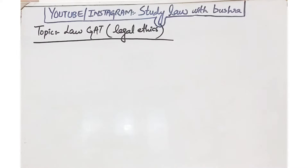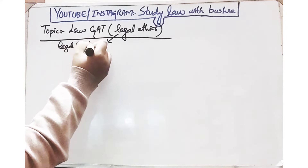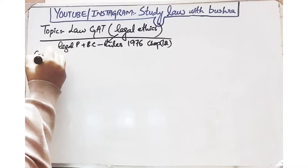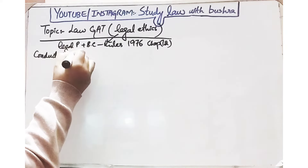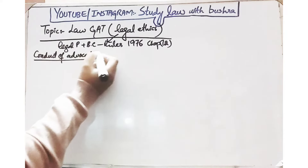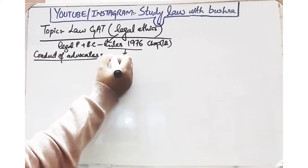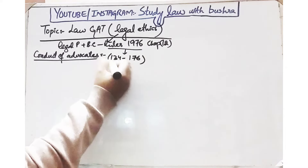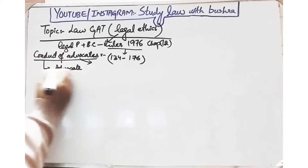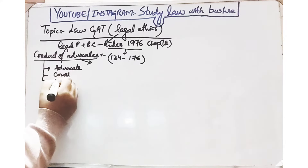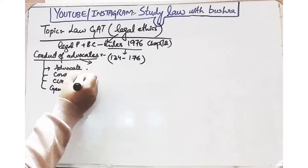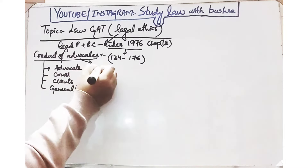So let's move towards the discussion. Legal ethics kya hai? Legal Practitioners and Bar Council Rules 1976 ke under Chapter 12 mein humein kuch rules bataye gaye hain — what is the conduct of an advocate, how an advocate should behave. Is chapter ke under humein four categories bataye gaye hain: ek advocate ka ravaiya doosre advocate ki taraf, court ki taraf, clients ke saath, aur general public ki taraf kaise hoga. Hum one by one in categories ko discuss karenge.